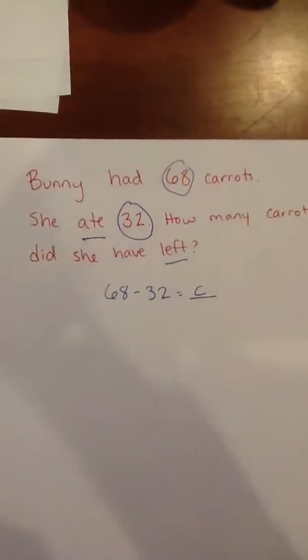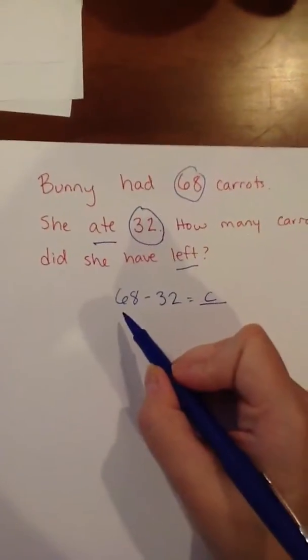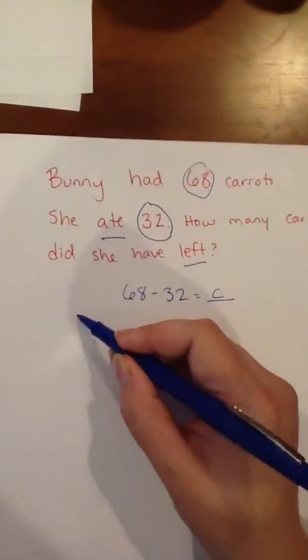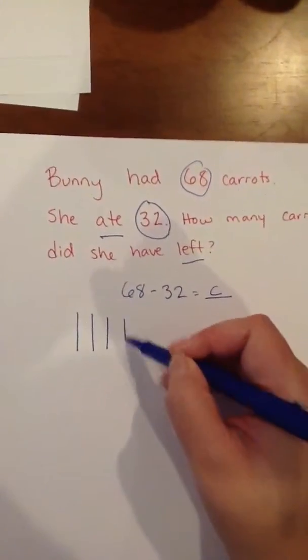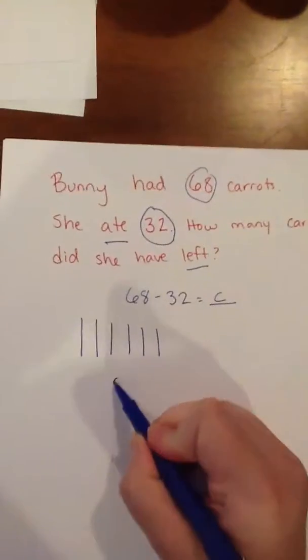And let's draw our strips of tens and ones. How many tens are in 68? There are six tens, so I'm going to draw six lines. 3, 4, 5, 6. Label that 60.